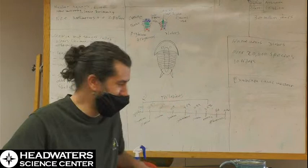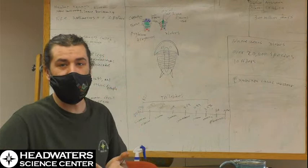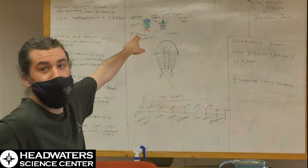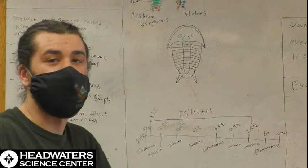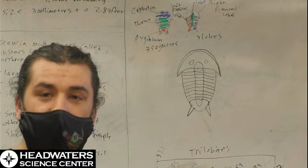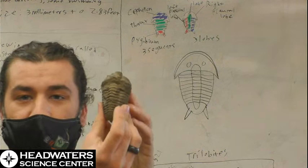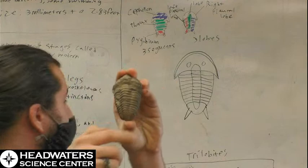They get their name, trilobite, from the three lobes of their bodies. They also have three segments. We can zoom in on that top drawing of the green. They have the two pleural lobes, which are the left and right side, and the central or axial lobe, which you can actually see pretty well on the fossil here. These lobes would be these parts of their midsection, otherwise known as their thorax.